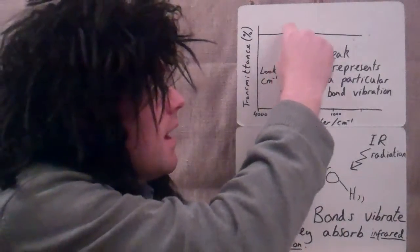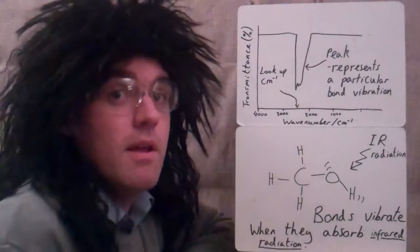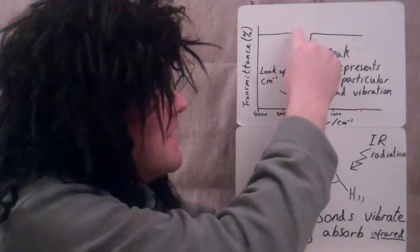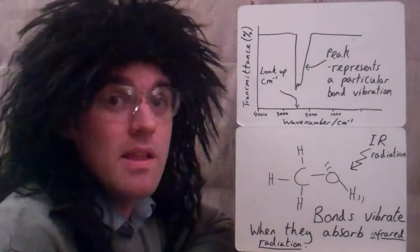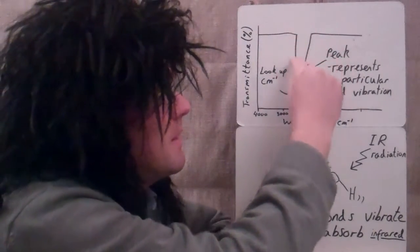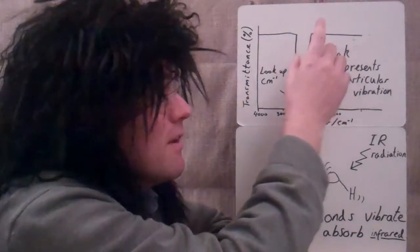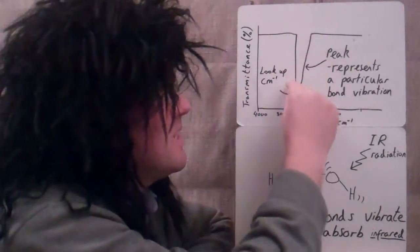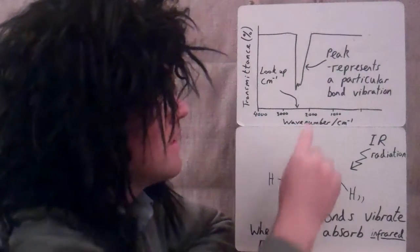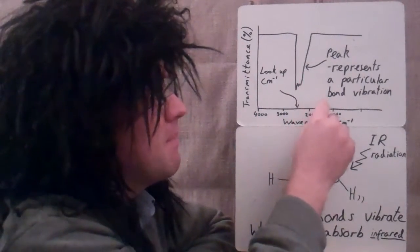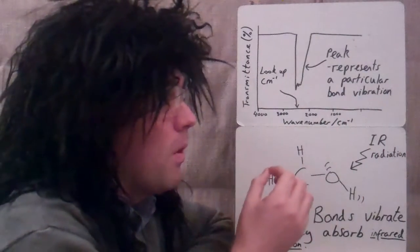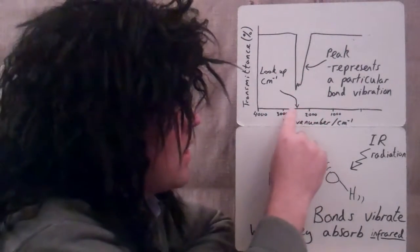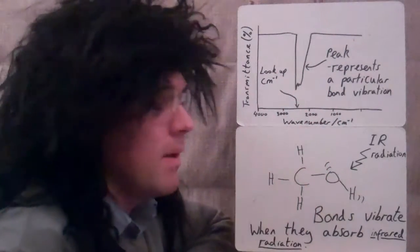It's not going across here, it's been absorbed. That energy has been taken away so it's no longer going through the sample. We get this - even though it's a trough, we call it a peak. That peak represents a particular bond vibration. A particular bond has vibrated and absorbed energy here. We can look at this number here and look it up and work out what bond it was, which bond was vibrating.